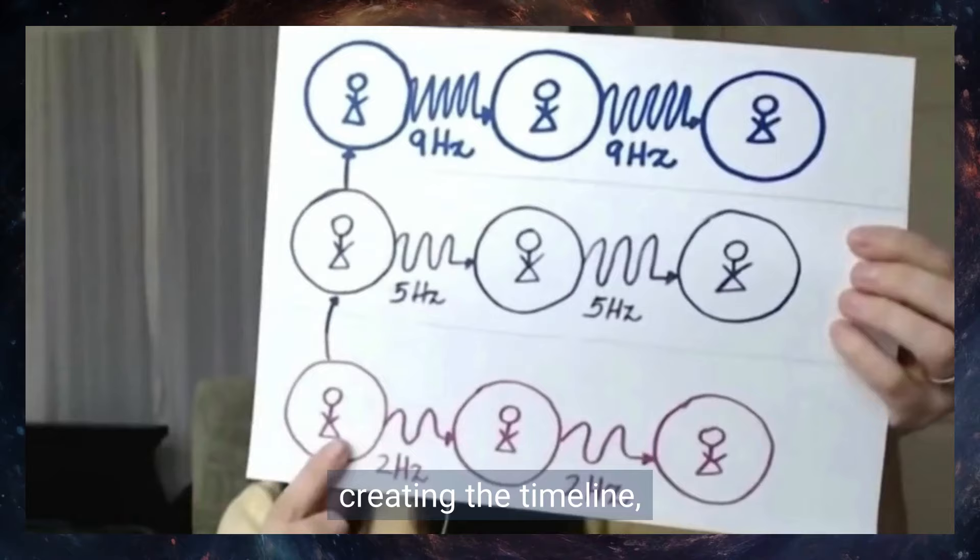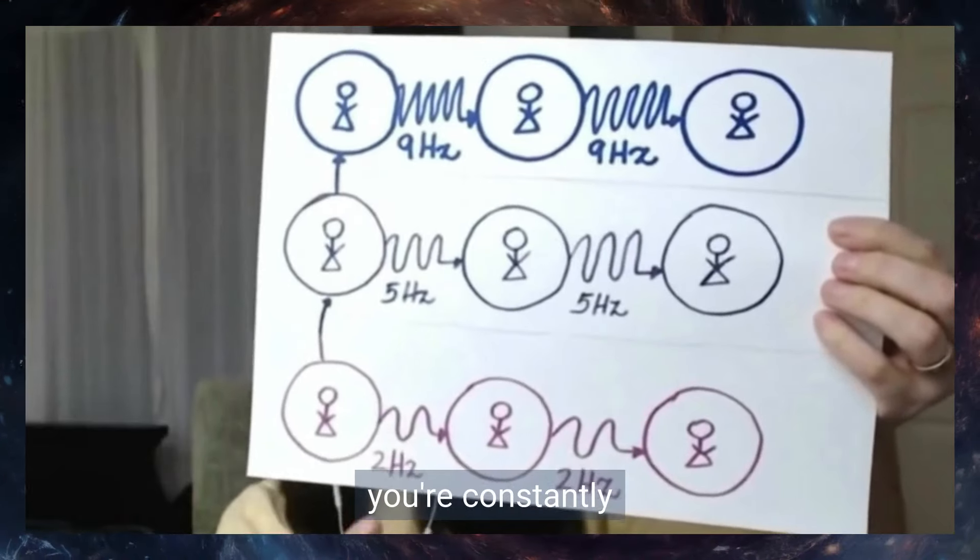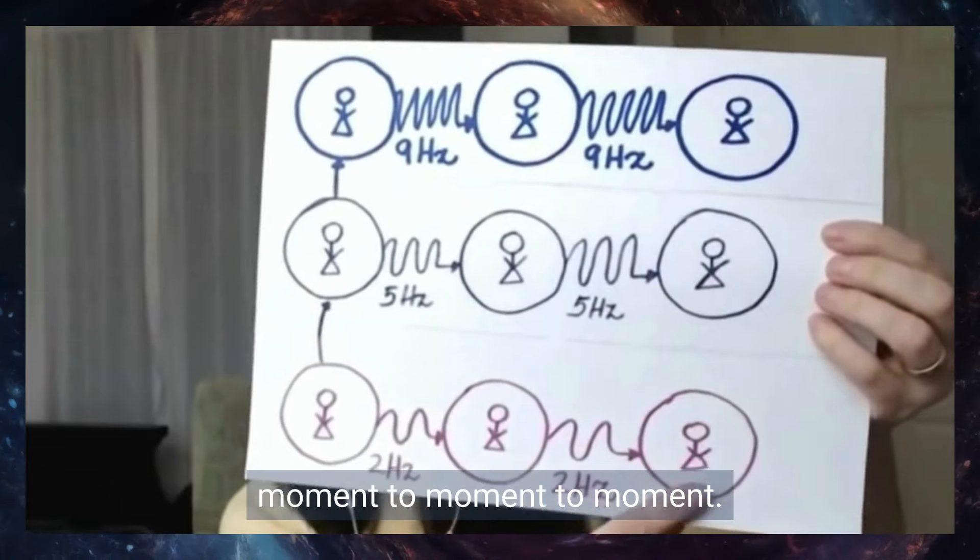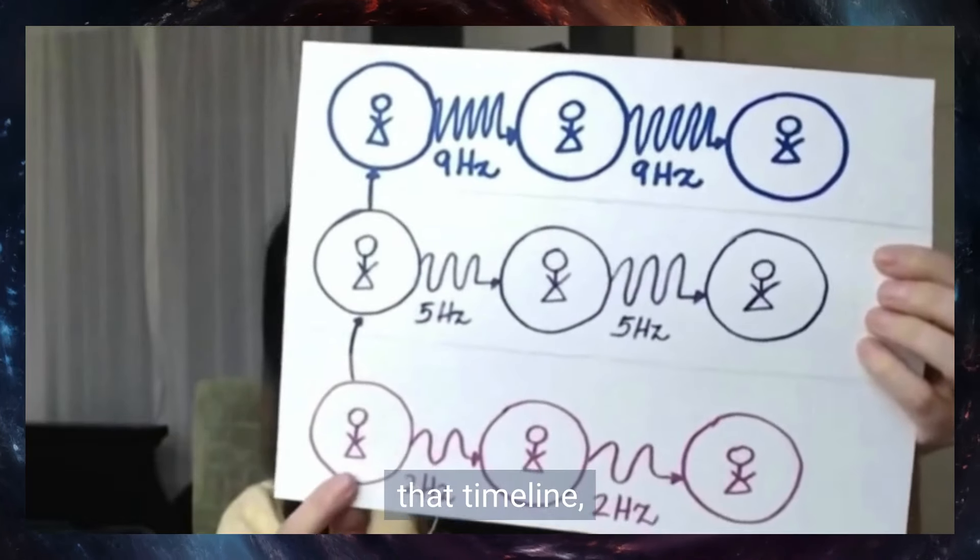That's how you're creating the timeline. And you're crystallizing the timeline because you're constantly staying in the same negative emotion from moment to moment to moment. If you want to change that timeline, you have to raise your vibration of thoughts that are positive.